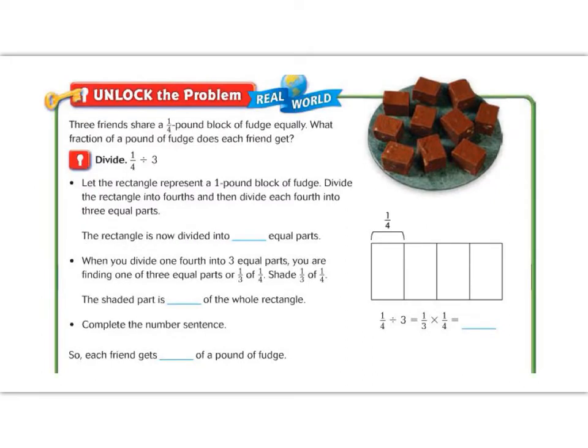Let's jump in and read the Unlock the Problem. It says, three friends share one-fourth pound of a block of fudge equally. What fraction of a pound of fudge does each friend get? So we have a fourth of a pound, and we're going to split that fourth of a pound into smaller pieces. So if we look here at our model, it says, let the rectangle represent a one-pound block of fudge. Now, we don't have a whole block, but we're going to use it to represent one-fourth.